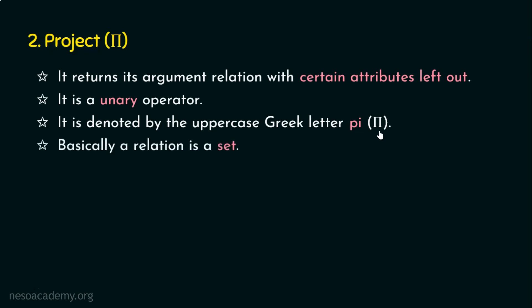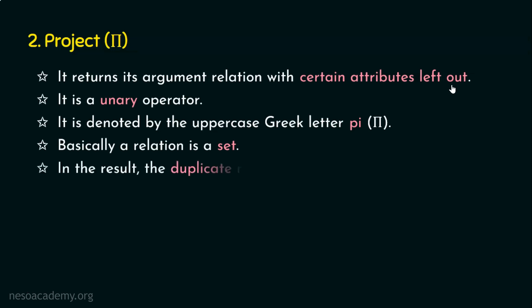A relation is basically a set, so all mathematical set concepts are applicable to relations. The output of the project operation is the relation with certain attributes left out. Regarding duplicate values: when duplicate rows appear in the result, they are eliminated. If two rows have the same values in the output, only one will be listed — the duplicate will not be displayed. That's one of the important features of the project operation.